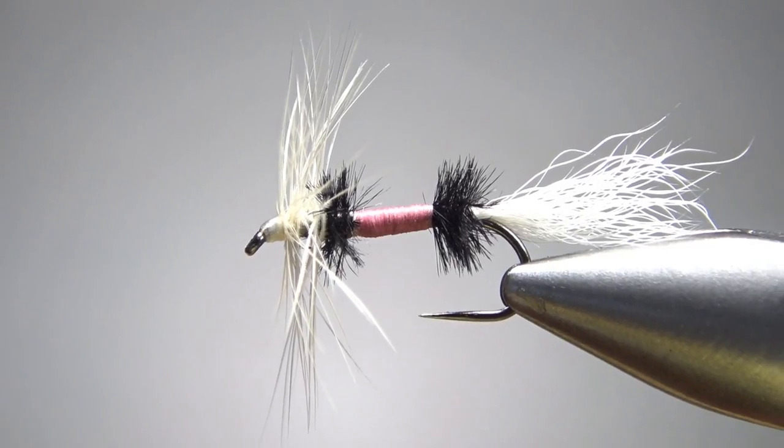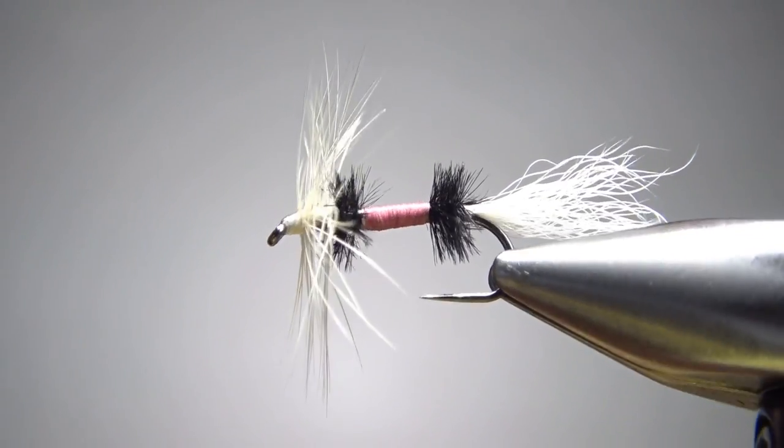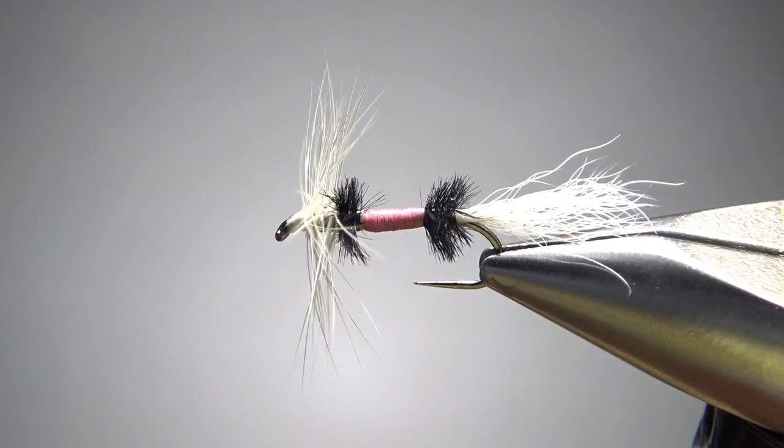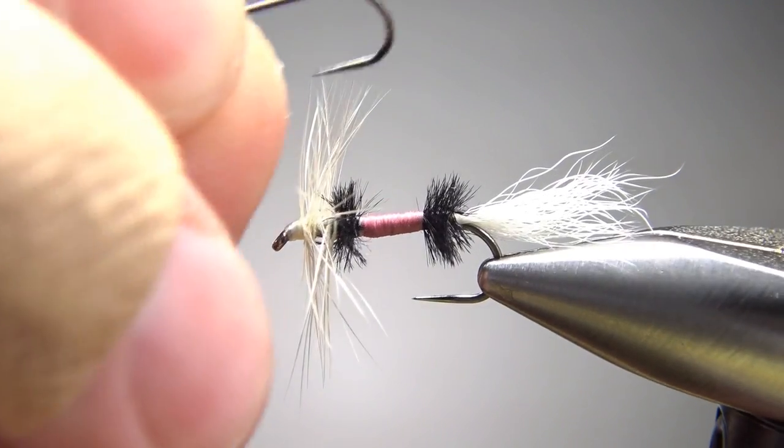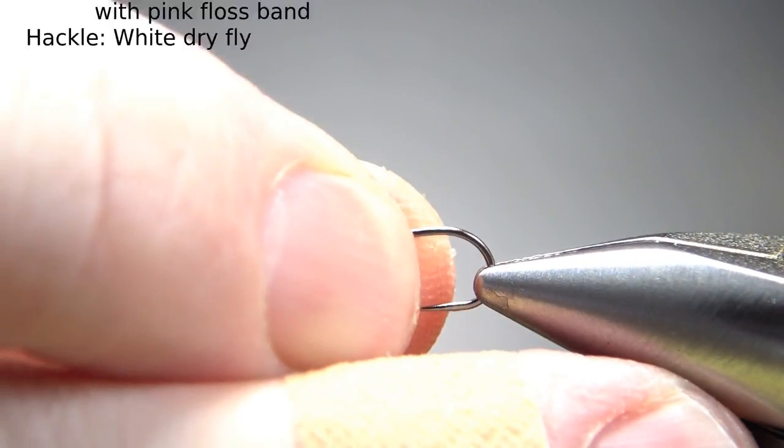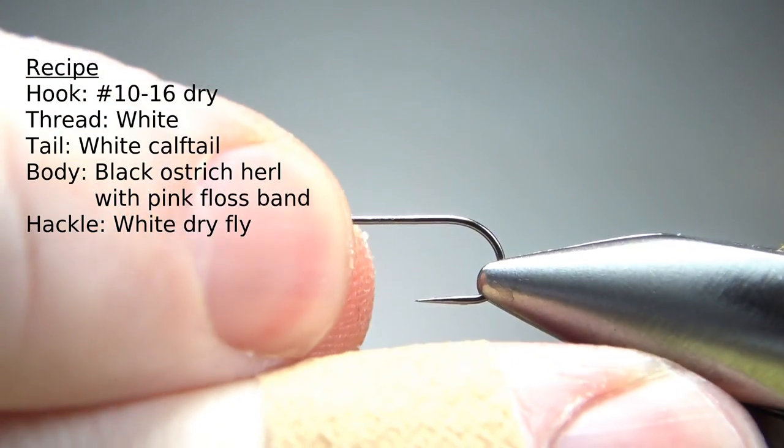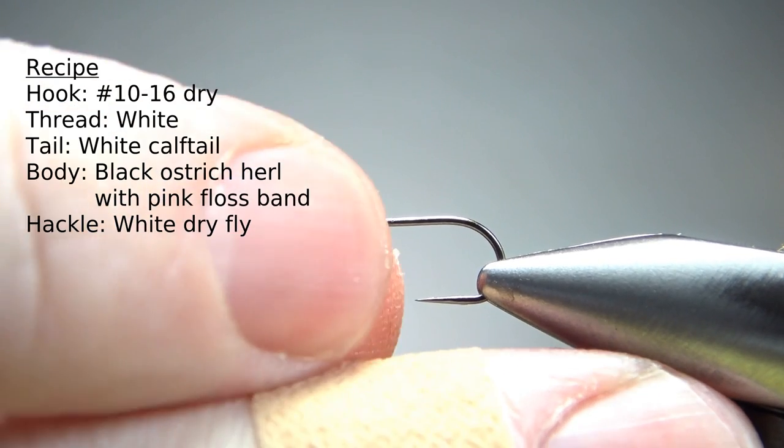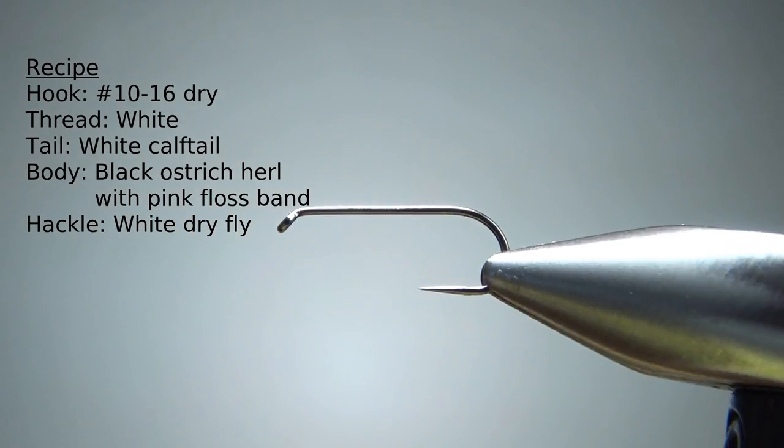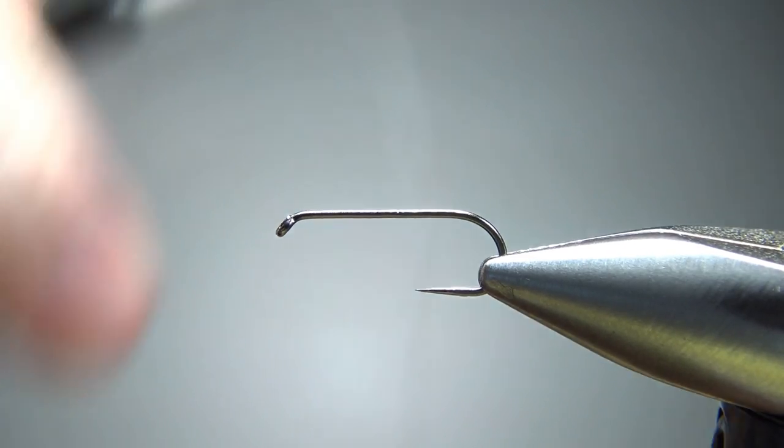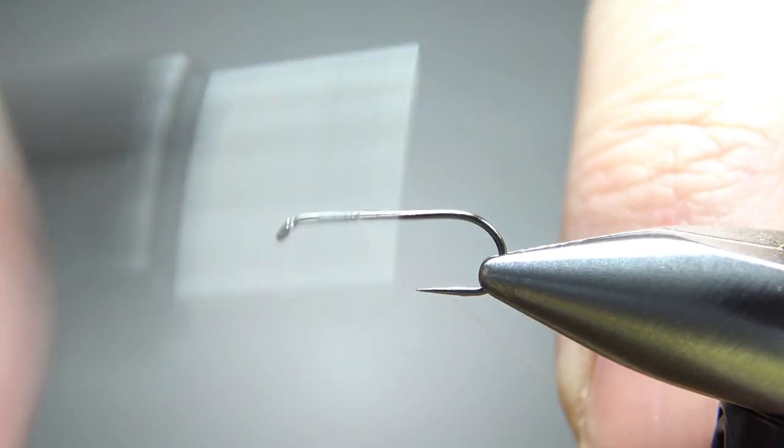So there it is, the Royal Lady. I think it's a pretty cool looking, elegant little pattern. Not a whole lot to it and not all that complicated. Now the pattern does say size 10 to 16. I'm going to tie it on a size 12. This is a 1X long dry fly hook. And I'm going to lay down a base of white thread to the start of the bend. This is a 70 denier.